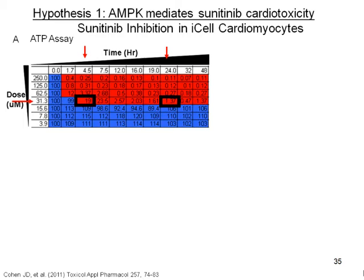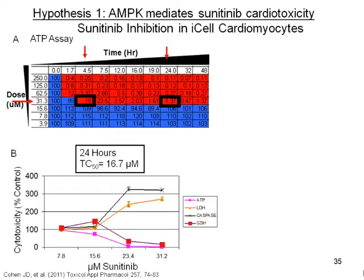First, we wanted to profile sunitinib-mediated cardiotoxicity in the IPS cells. With an ATP depletion assay over a concentration range of 4 to 250 micromolar and a time course from 0 to 48 hours, we wanted to determine a more narrow window for further experiments. As early as 4 hours at 31 micromolar, there was an 80% depletion of ATP, and by 24 hours, around 1% of cells were still alive. I was able to narrow the dose-response curve to approximately 8 to 31 micromolar.